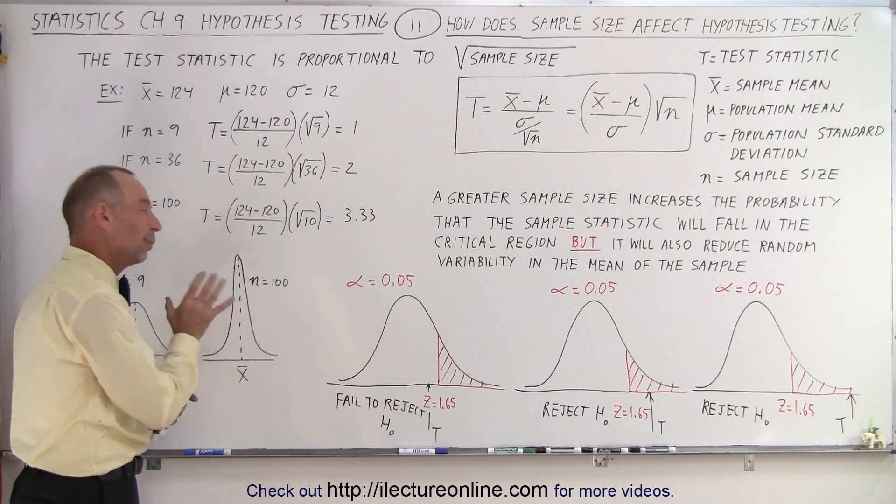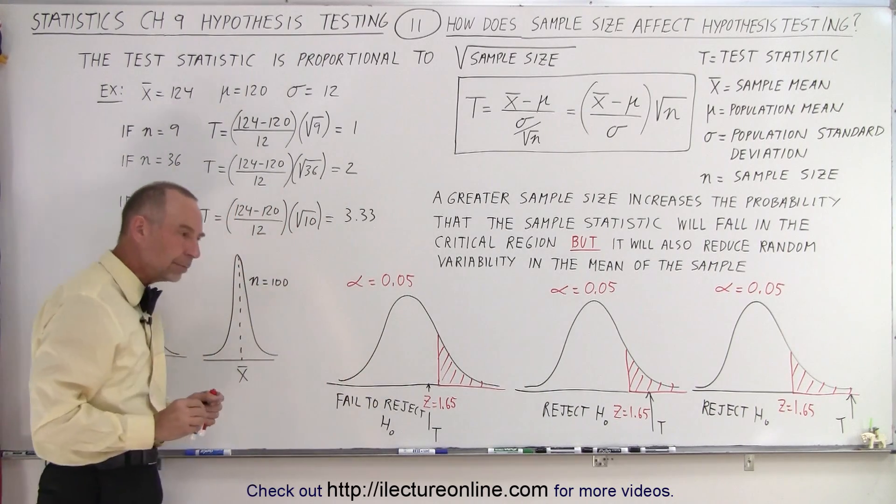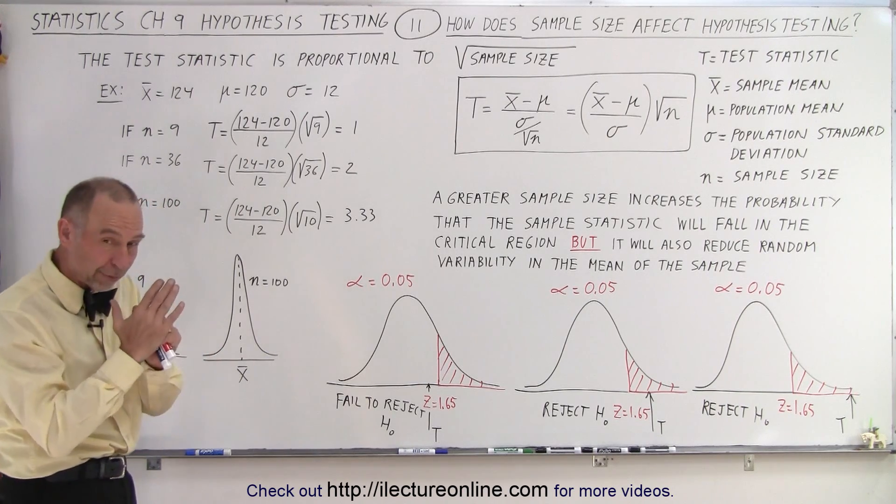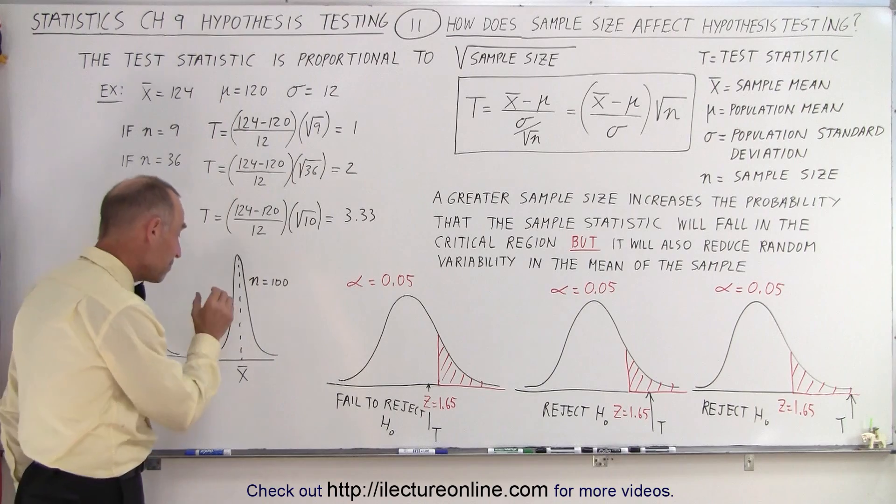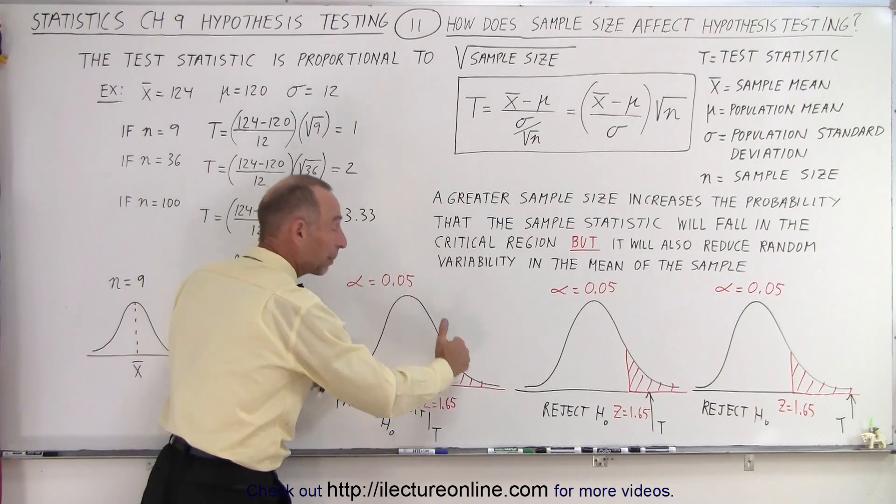So in other words, if the sample reflects the population, then the two values, the mean of the sample and the mean of the population will be very close together. But if the mean reflects a different value than the population, because the population is based on the null hypothesis...